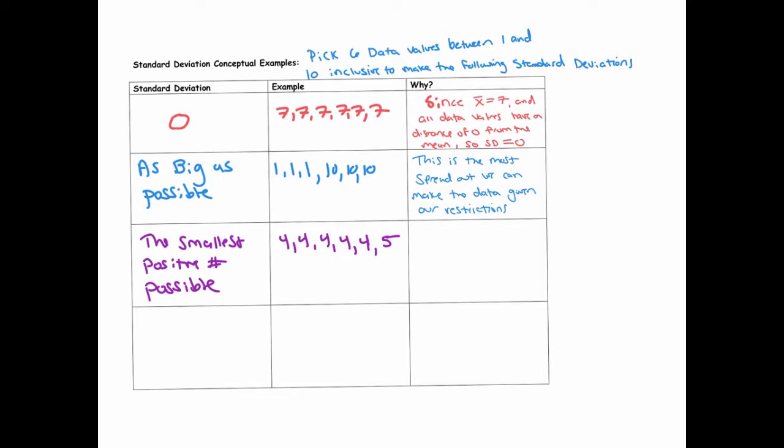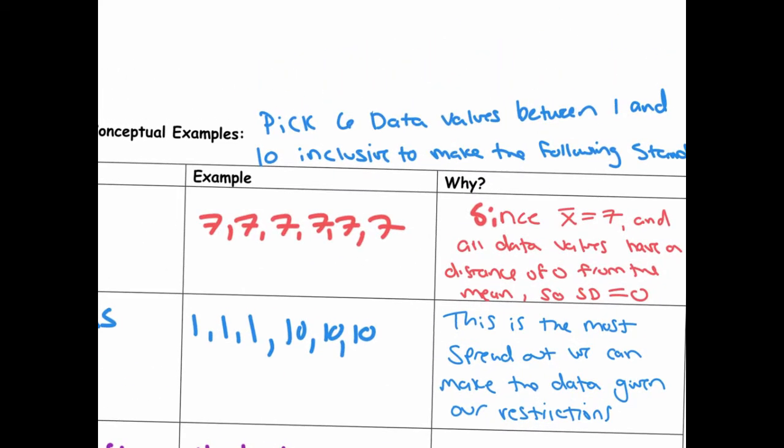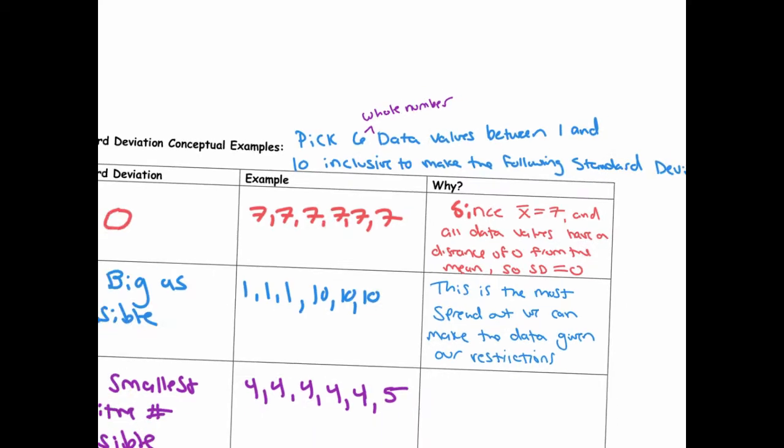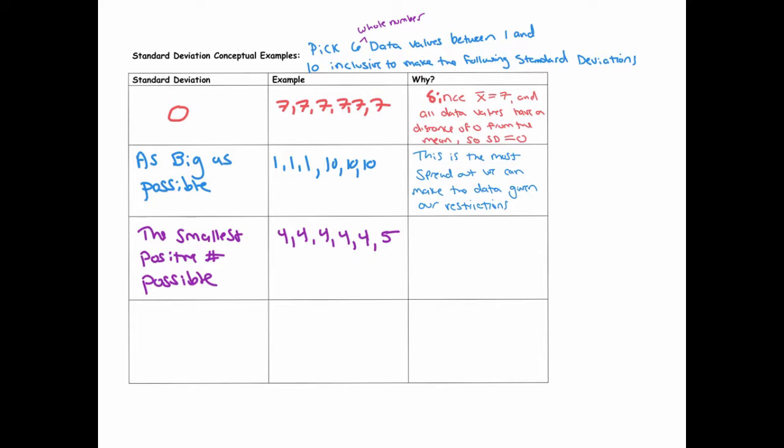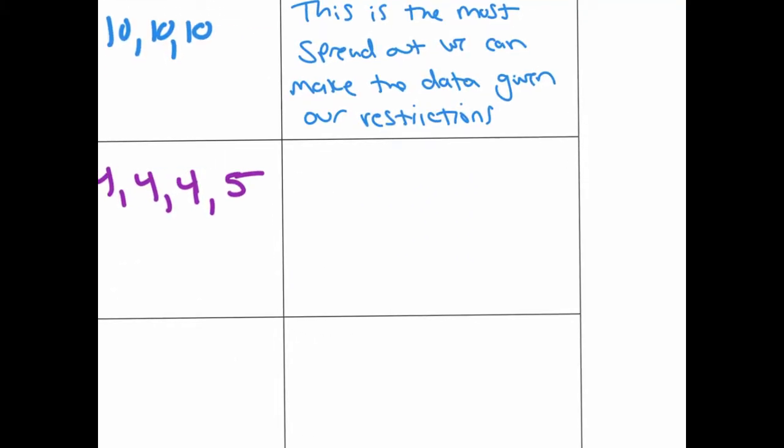So again, let me just indicate that data values, whole number data values. Okay, so that, I mean, otherwise we could do 4.1 or 4.001. So this matters. So what explanation do we give as why we know that this is going to give, and there are many examples. You could do five ones and then a two, or you could do five fours and a three. All of those should produce the smallest positive standard deviation. This isn't the only example.